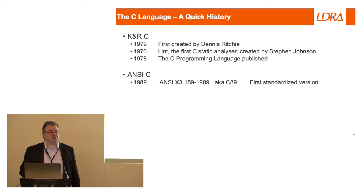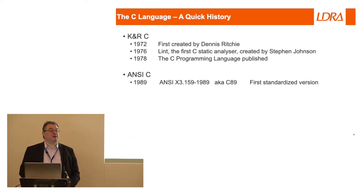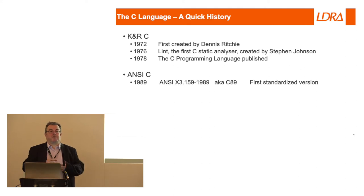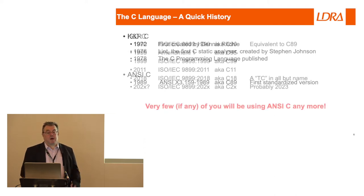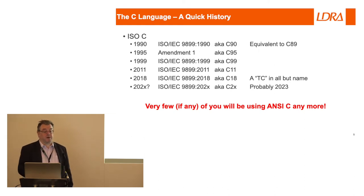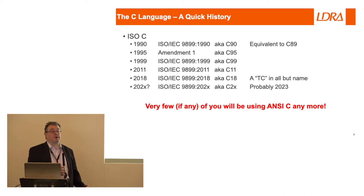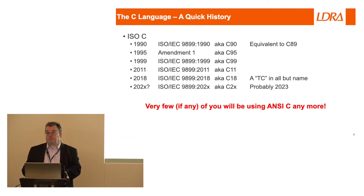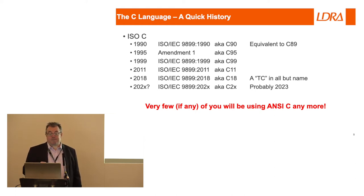Then in 1978, the book we perhaps all know and love — the C Programming Language by Kernighan and Ritchie — that has sat on many shelves. 1989: lots of development, lots of parallel tracks, lots of complete incompatibility, but we still called it C. We tried to bring it together and created a standard, originally led by the Americans — hence ANSI C. Only a year later that was fast-tracked through as an ISO standard: C90, perhaps the most commonly used version even now.